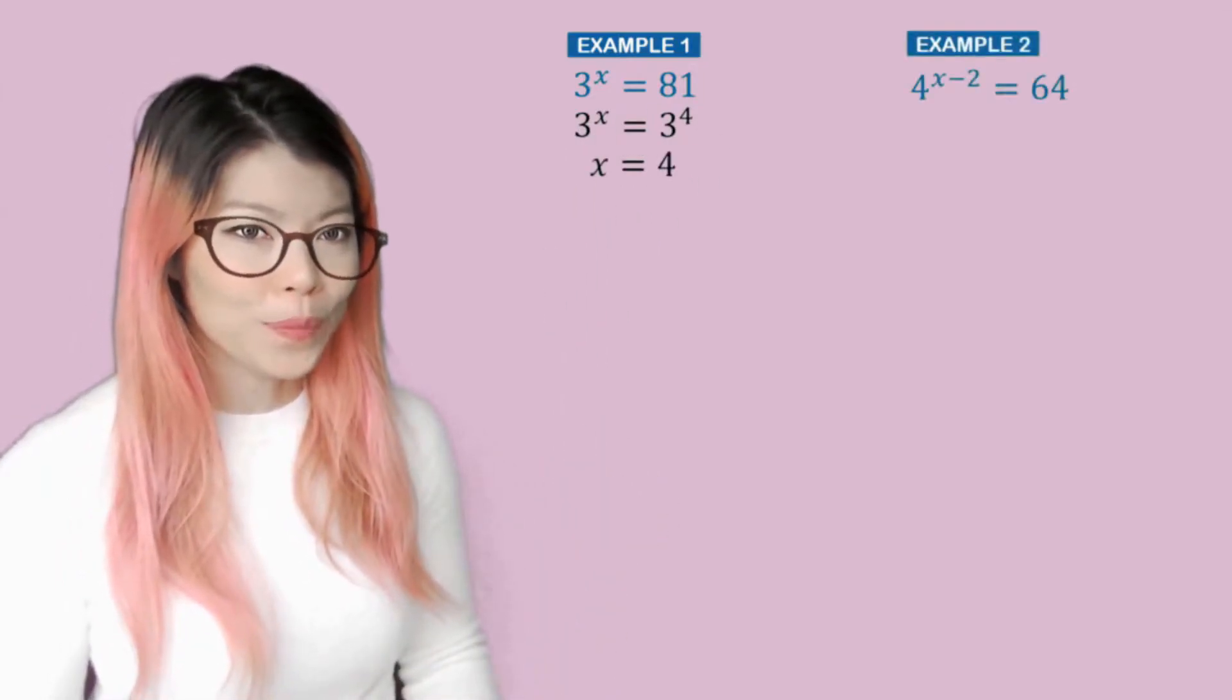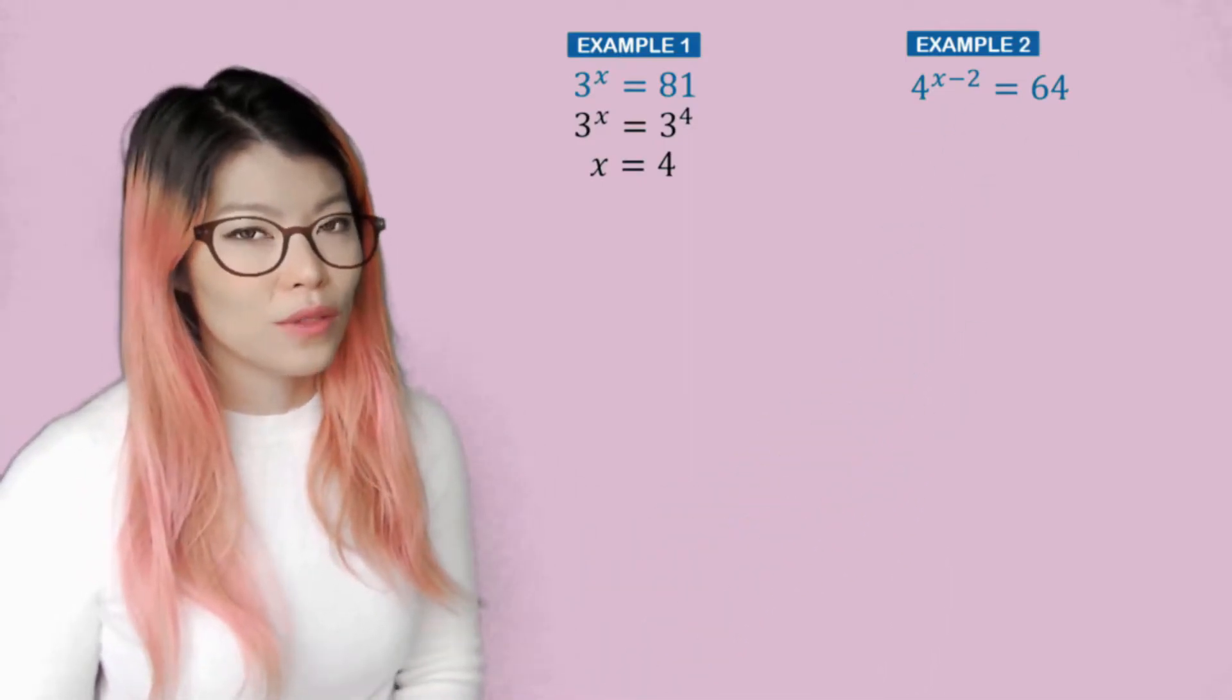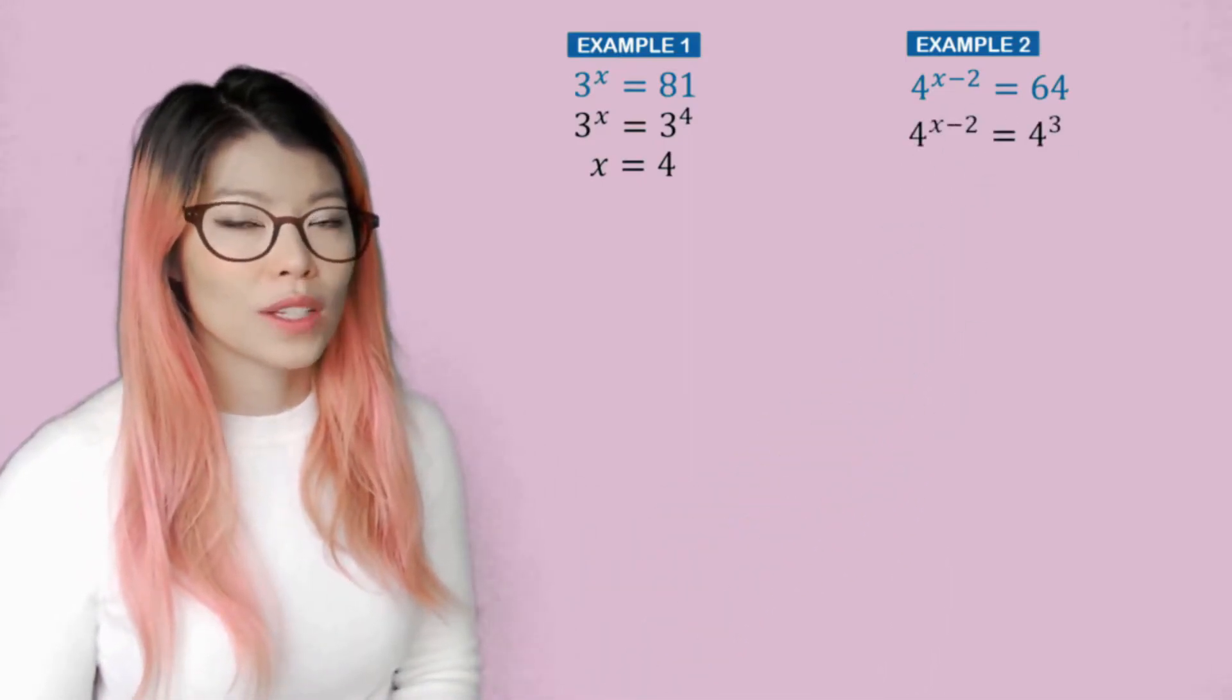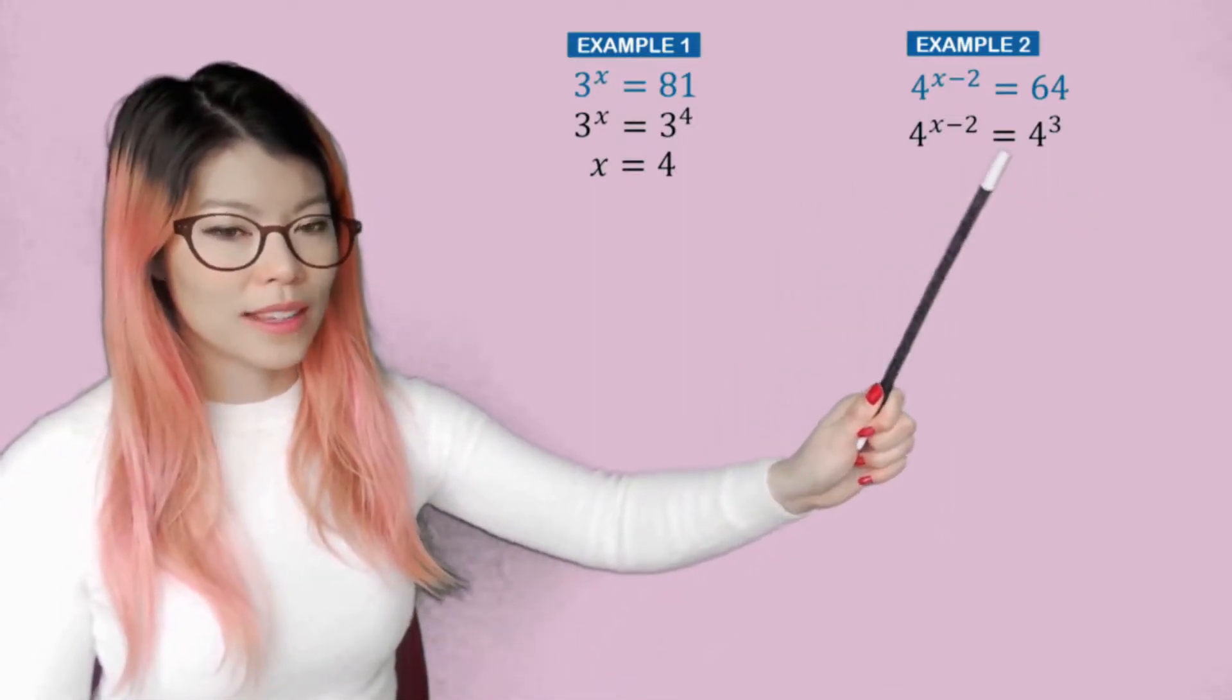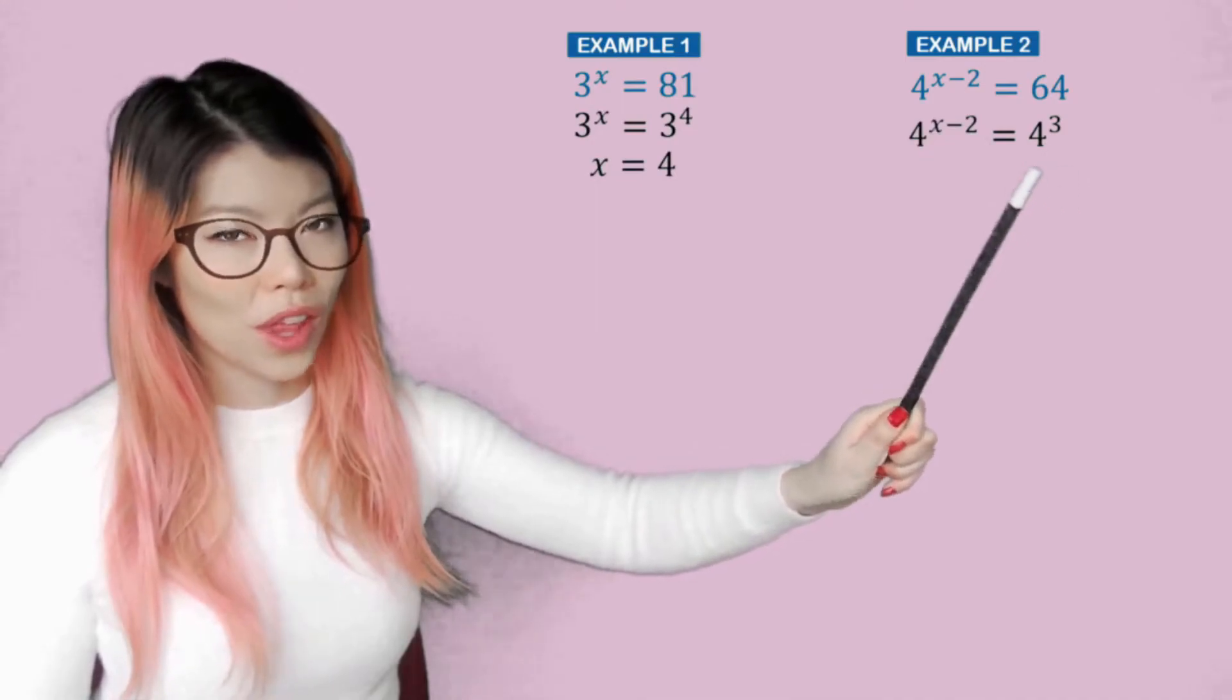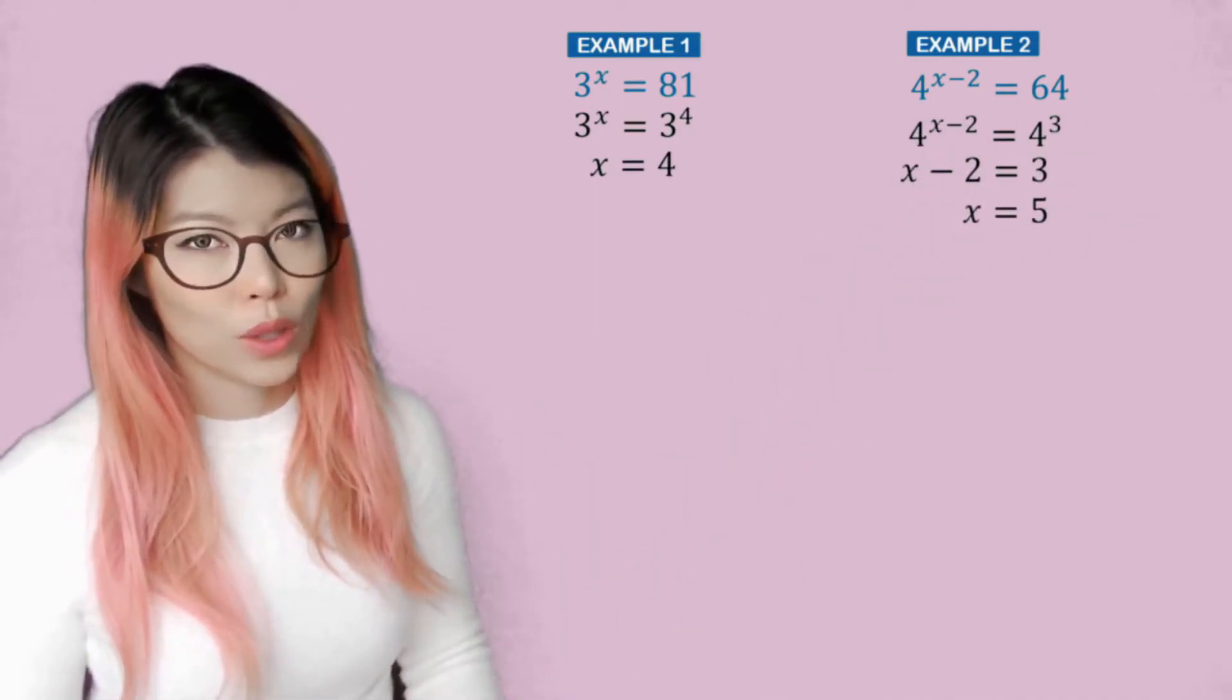Next example: 4^(x-2) = 64. How else can you write 64? You can write 64 as 4 to the 3. So now because they have the same base, we can say that x minus 2 is equal to 3. So then bring the 2 over, we have x equals 3 plus 2, which is 5.